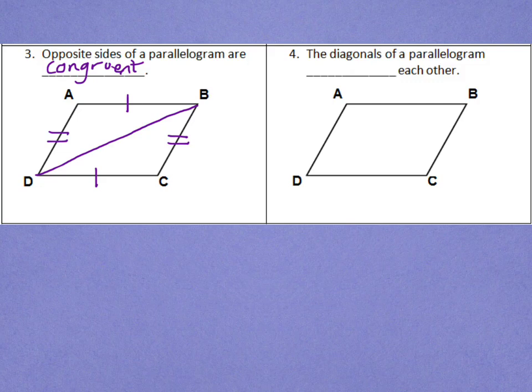Finally, our last property is that the diagonals of a parallelogram bisect each other. Let's draw in those two diagonals, diagonal BD and diagonal AC. If they bisect each other, that means they cut each other in half. That's the meaning of the word bisect. So, AC is cut in half by BD, and BD is cut in half by AC. There, that diagonal has been bisected.